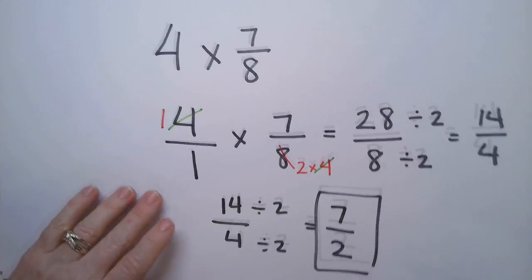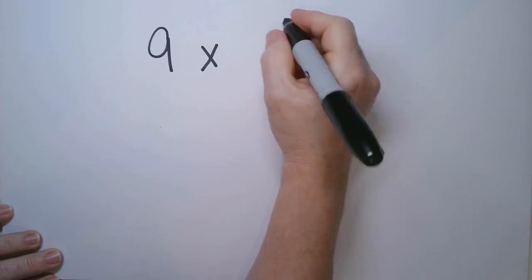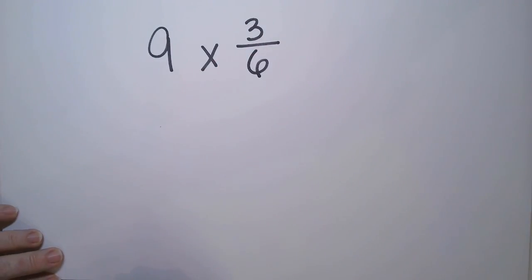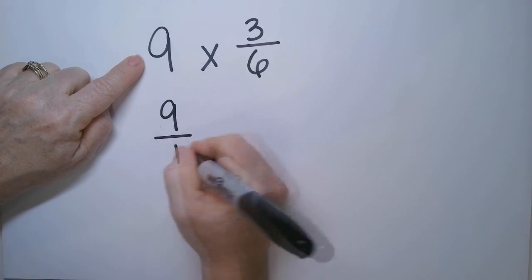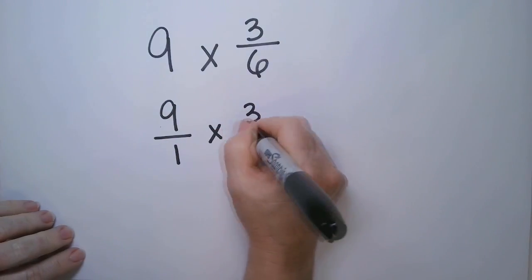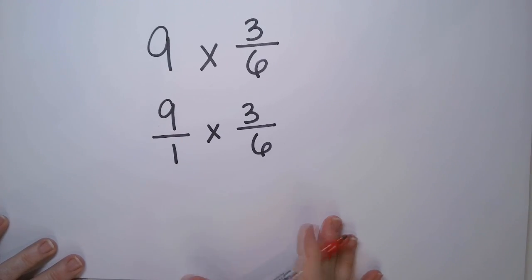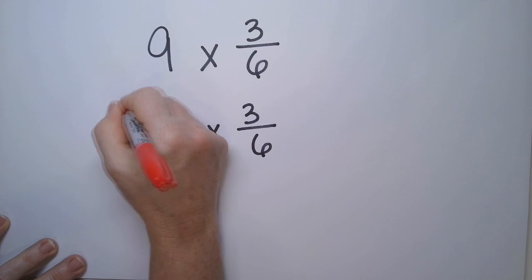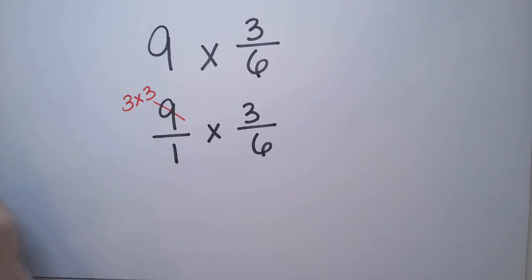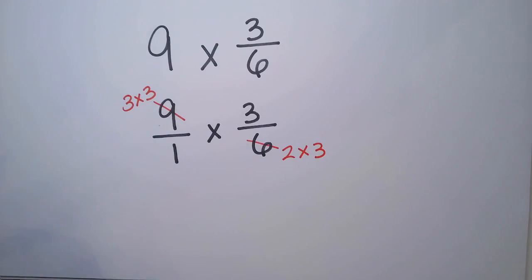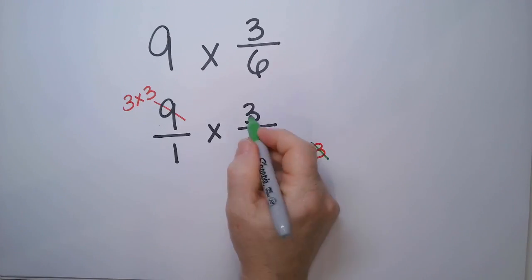Let's try another one. I have 9 times 3 sixths. So this becomes 9 over 1 times 3 over 6. Let's reduce a little bit before we dive into multiplying. So 9 is 3 times 3. So this 6 here is 2 times 3.